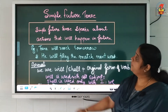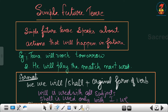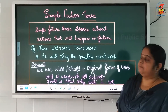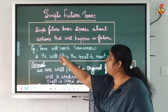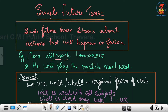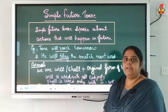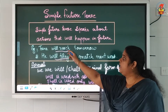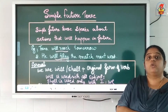Simple future tense speaks about actions that will happen in future — that is going to happen in future. For example: 'Tina will reach tomorrow.' She is not here now but will reach tomorrow. 'He will play the match next week.' These actions — will reach, will play — are going to happen.